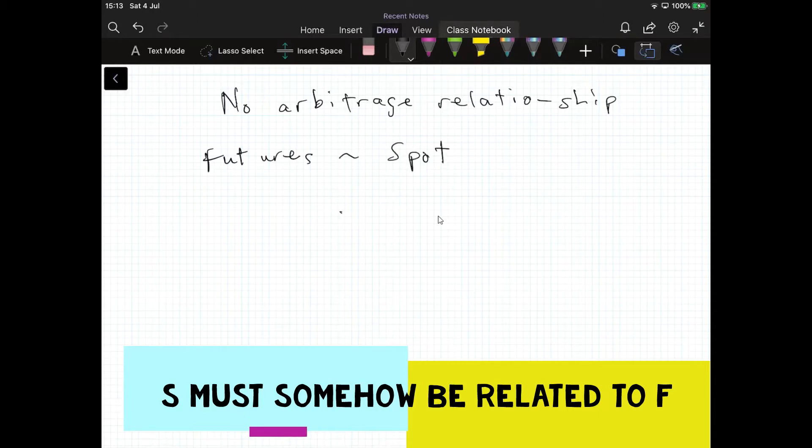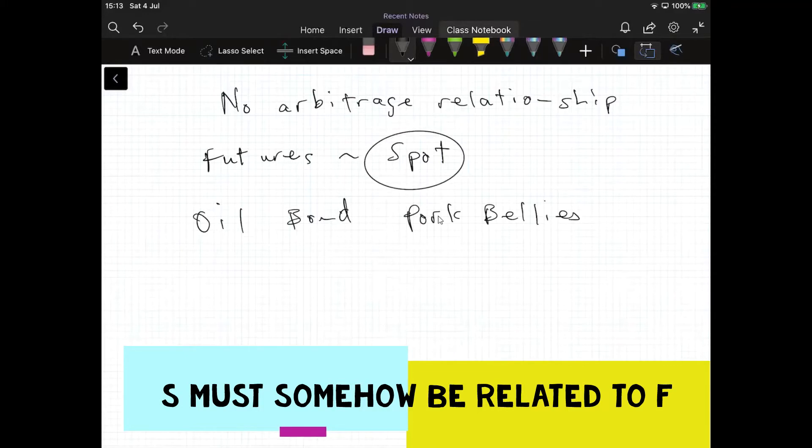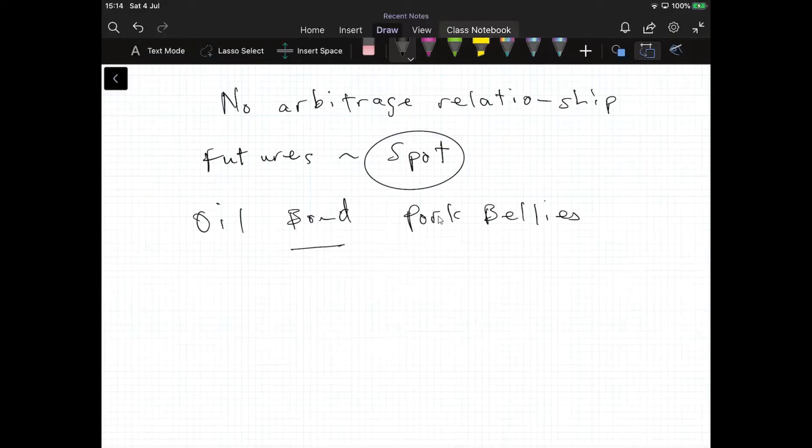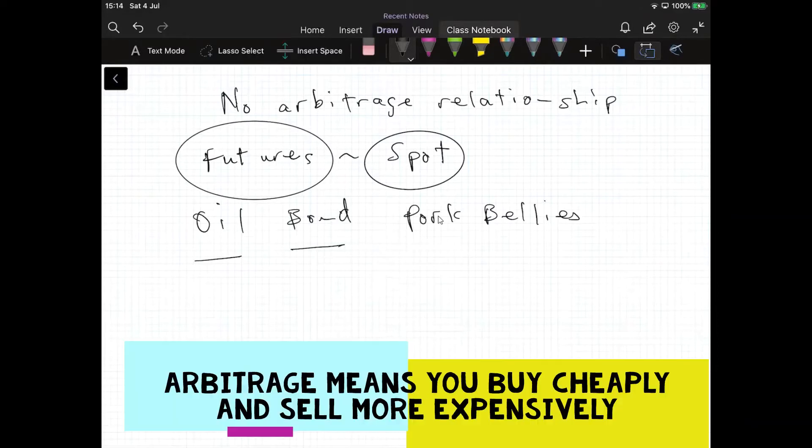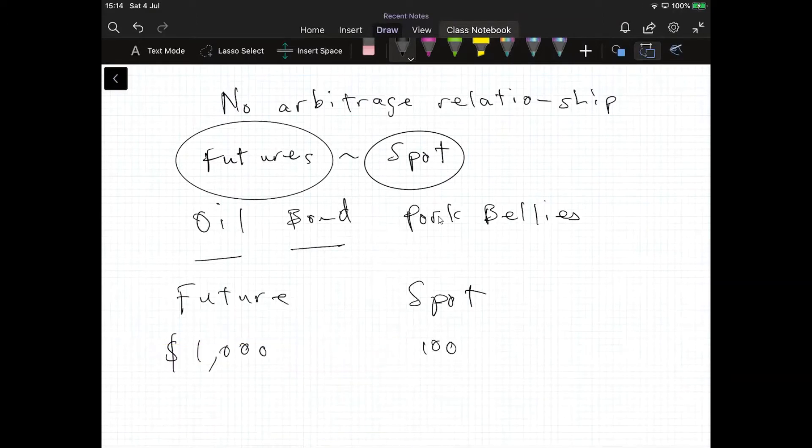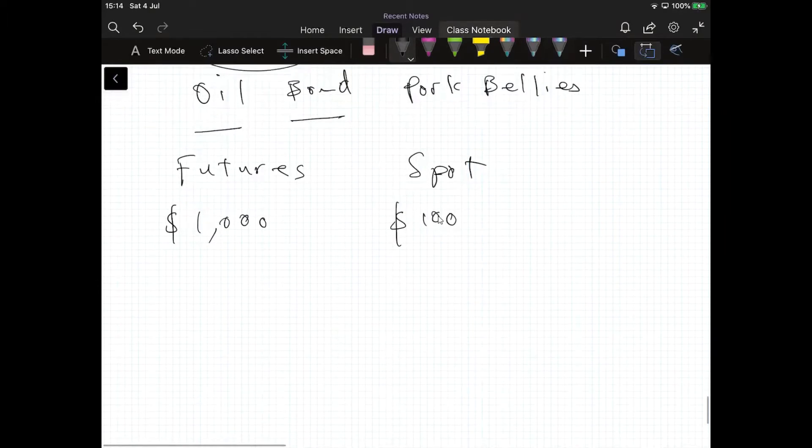There must be a relationship if we take oil or government bonds or pork bellies or whatever the underlying is. There must be a relationship between the price currently that particular instrument or commodity trades for in the market and then the price six months out, one year out, two years out. If the current spot price was very low but the futures price was extremely high, you can imagine a very bizarre situation where the futures price was really expensive but the spot price was really cheap for the same quantity, for the same product.